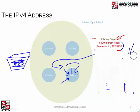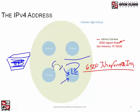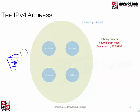Just for fun — what if the person who wrote the letter put my name inside the address itself, writing '6500 Johnny Carrera Ingram Road' instead of putting my name on top? There is no street called '6500 Johnny Carrera Ingram Road,' so that doesn't make sense to the mailman. The mailman would just discard that letter. It's important to keep those two pieces separated so we know what portion is the school's address and what portion is the person it's going to.